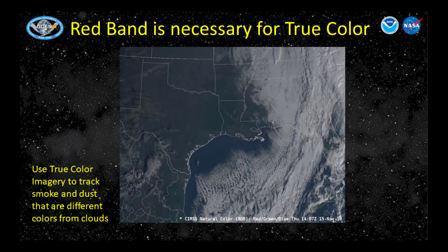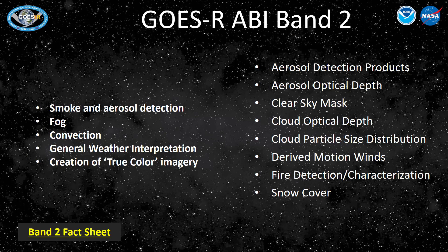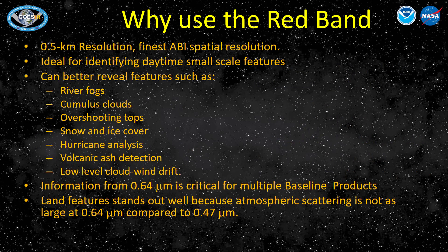AWIPS includes simulated true-color imagery that is made with the red band at 0.64 as well as with the blue band and the simulated green band from the veggie band. These true-color images, including for example geocolor, are useful for tracking smoke features because smoke has a very distinct color that is separate from clouds in true-color imagery. This slide shows when you might use visible imagery on the left, and Level 2 products that use the imagery on the right. There's also a link you can click to see a Band 2 fact sheet.